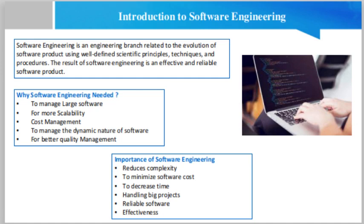Reliable software: software should be secure, meaning if you have delivered the software it should work for at least its given time or subscription period. If any bugs come in the software, the company is responsible for solving them. In software engineering, testing and maintenance are included, so there is no worry about reliability. Effectiveness: effectiveness comes when anything is made according to standards. Software standards are a big target of companies to make software more effective, and software engineering helps achieve this.